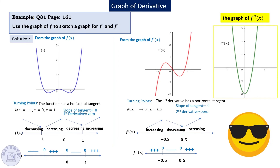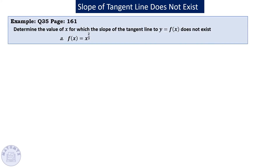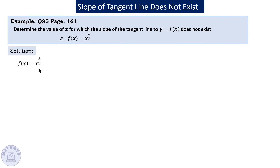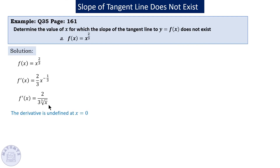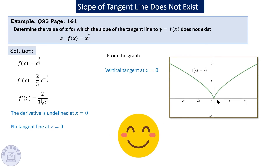One last example: determine the values of x for which the slope of the tangent line does not exist. Apply the power rule to f(x) = x^(2/3): the derivative is (2/3) x to the power −1/3. Simplifying, 1/x^(1/3) is x under the cube root in the denominator. This expression is undefined at x = 0, so at x = 0 you get a vertical tangent line or a cusp. Thank you for watching — see you next time.